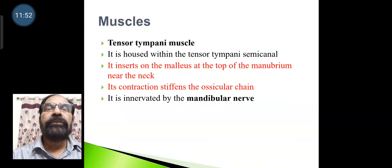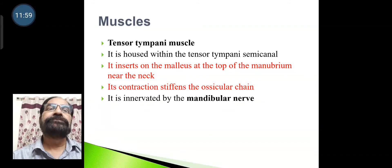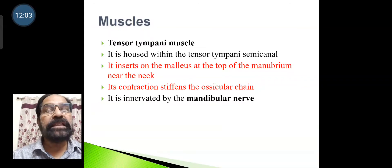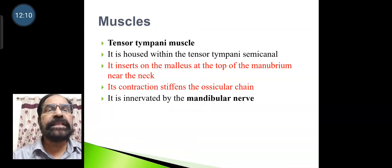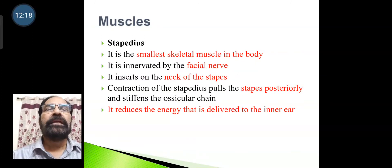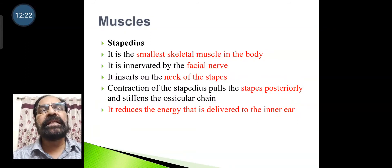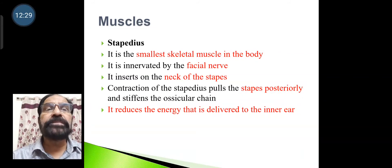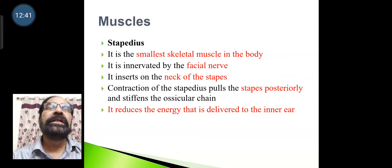There are two muscles of the middle ear. The tensor tympani is housed within the tensor tympani canal and inserts on the malleus at the top of the manubrium near the neck; its contraction stiffens the ossicular chain and it is innervated by the mandibular nerve. The stapedius is the smallest skeletal muscle in the body, innervated by the facial nerve, and inserts on the neck of the stapes. Its contraction pulls the stapes posteriorly, stiffening the ossicular chain — opposite to the tensor tympani — and reduces the energy delivered to the inner ear.